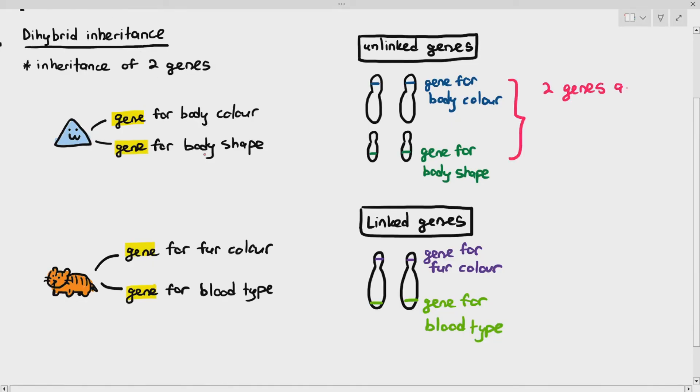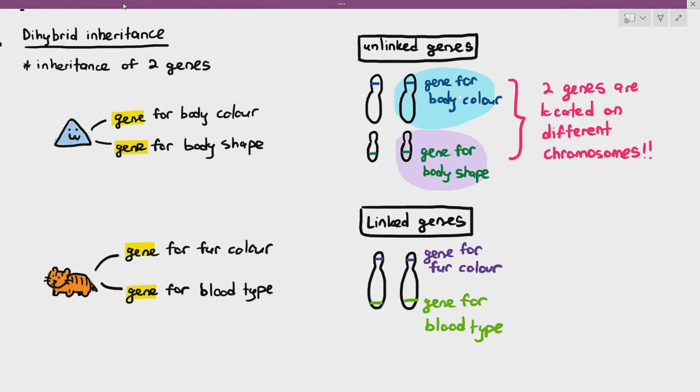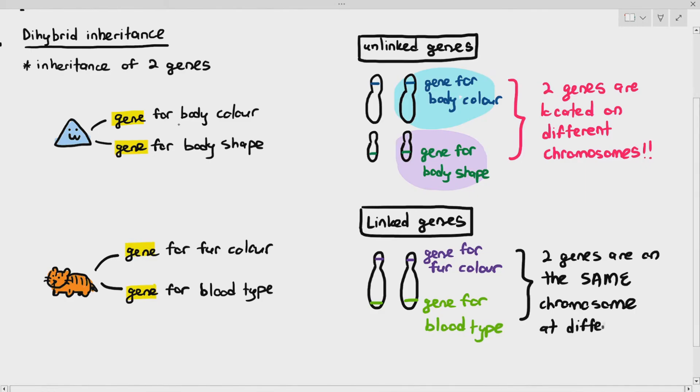But if you notice for the case of the tiger, in my example (please do not memorize this), the gene for fur color and the gene for blood type are located on the same chromosome, but they are just on different positions or different loci.